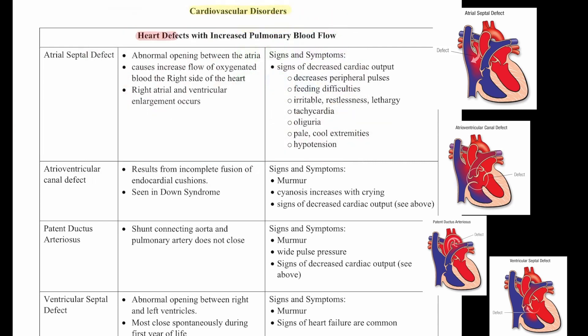The first type we're going to talk about is heart defects with increased pulmonary blood flow. The first one is called an atrial septal defect. This is an abnormal opening between the atria that causes increased flow of oxygenated blood to the right side of the heart. Right atrial and ventricular enlargement occurs. Signs and symptoms are signs of decreased cardiac output, so we'll see decreased peripheral pulses,